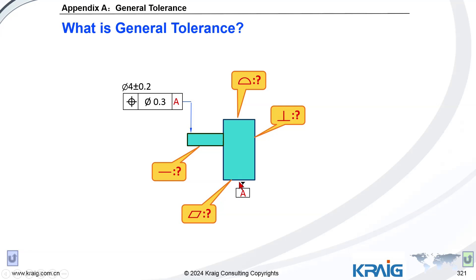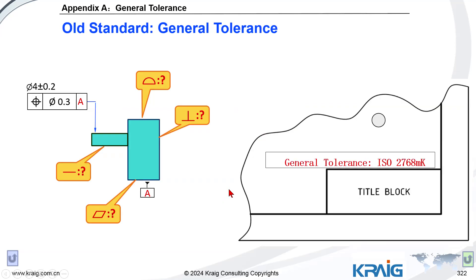Similarly, for a bottom surface there should be a flatness tolerance because the actual part could be deformed and not perfectly flat. We need some flatness value there, but we don't know what it is, so we rely on general tolerance. Let's produce this part and put the standard number in the drawing.